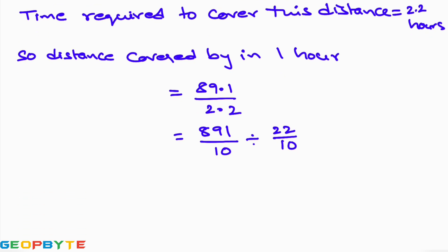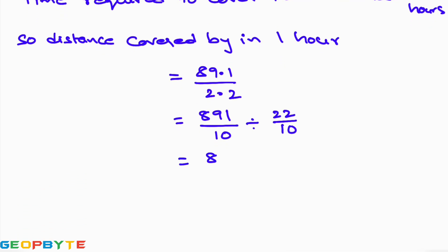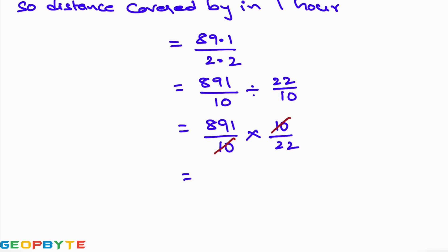89.1 by 2.2 equals 891 by 10 divided by 22 by 10. The 10s cancel, giving 891 by 22. Dividing, we get 40.5 kilometers. So if the car covers 89.1 km in 2.2 hours, the distance covered in one hour is 40.5 kilometers.